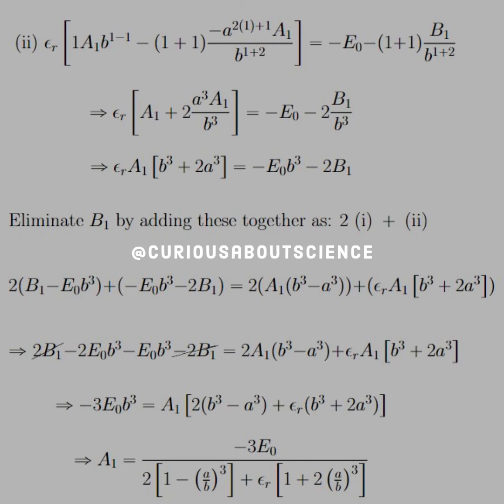So then applying this to equation two and simplifying down, we yield another equation with the external field term and a capital B term. Since we don't really need B, we can eliminate that by adding the two equations together. We multiply equation one by two and add that to equation two. We do that so that the B terms will cancel, leaving us with an easy algebraic equation to solve. And sure enough, we are left with A1 equals negative three E naught divided by two times one minus A over B cubed plus dielectric constant times one plus two multiplied by A over B cubed.